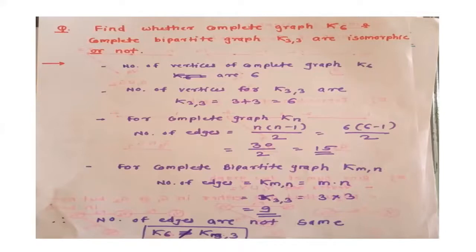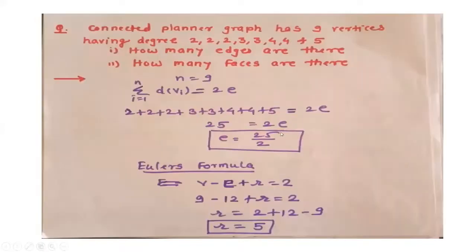Another example, based on the planar graph. A connected planar graph has 9 vertices having degrees 2, 2, 2, 3, 3, 4, 4, and 5. There are 9 vertices whose degrees are given. The first question is: how many edges are there? And the second question is: how many faces, or regions, are there?